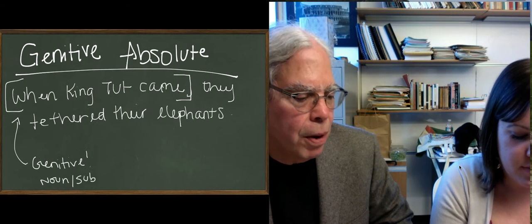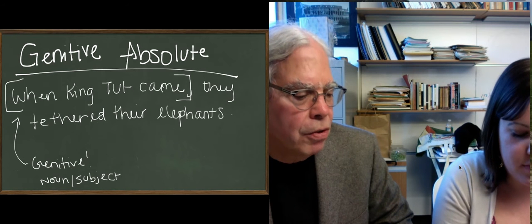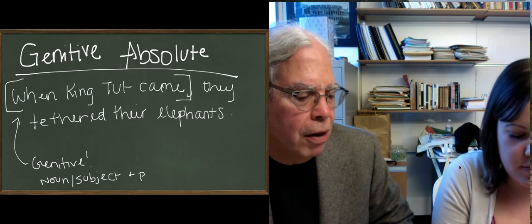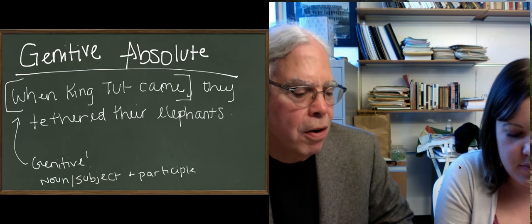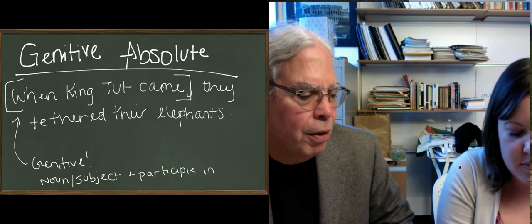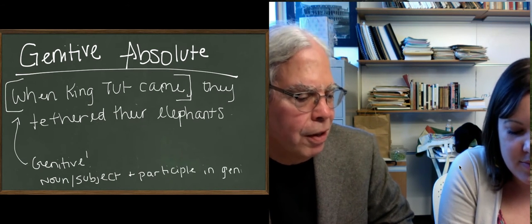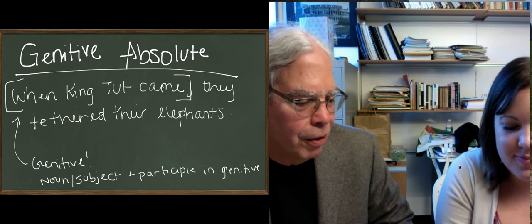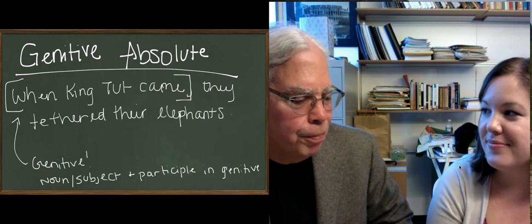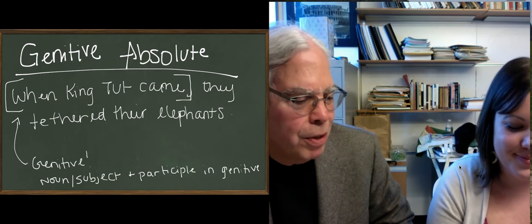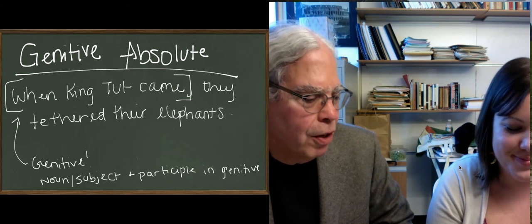And therefore the participle that agrees with it in the noun is going to also be in the genitive case. It can be genitive singular or genitive plural, depending upon if it's one King Tut or several horses or whatever, or princes. When the princes came, then you'd have genitive plurals.